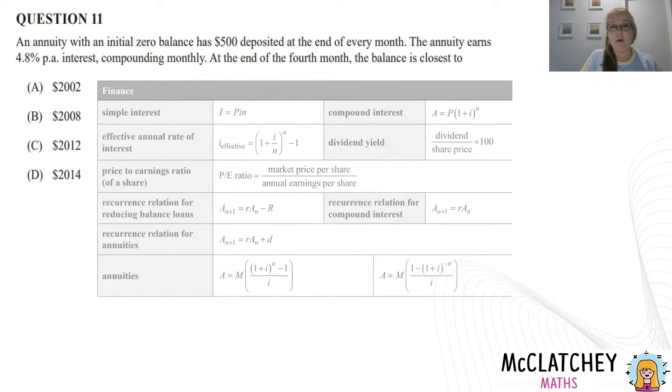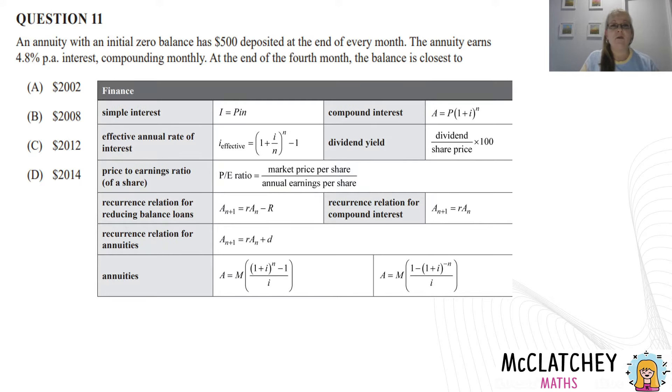We've been told it's an annuity. So let's find our recurrence relation, because we're looking for a balance after a certain number of months. And the best way to do that is to use a recurrence relation. So let's find that one for annuities. It's right there on the formula sheet. So let's write that down.